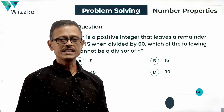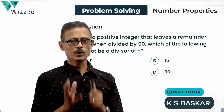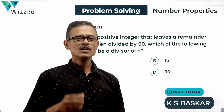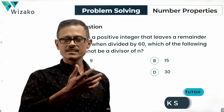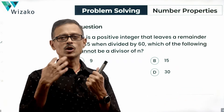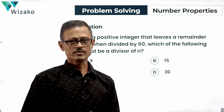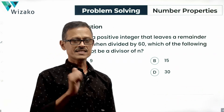This question is a medium difficulty GRE problem-solving question. It's a number properties question. The concept tested is Euclid's division algorithm, and properties of remainders is what is tested in this question. Let's get started.